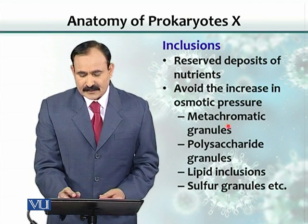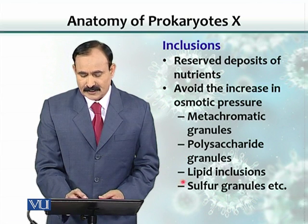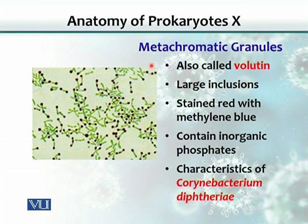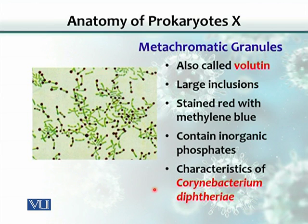Types of inclusions include metachromatic granules, polysaccharide granules, lipid inclusions, sulfur granules, and others. Metachromatic granules are also called volutins — they are large inclusions that can be stained with methylene blue and are an organic phosphate. Corynebacterium diphtheriae contains them, and their presence can be demonstrated in this bacterium. You can see the rod-shaped bacterium; the inclusion bodies appear slightly purplish with a red tinge when stained with methylene blue.